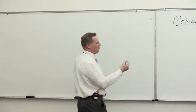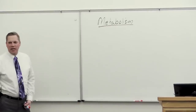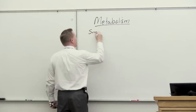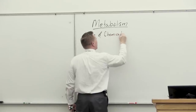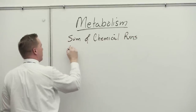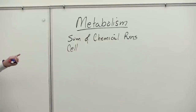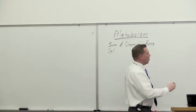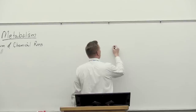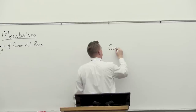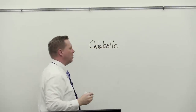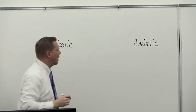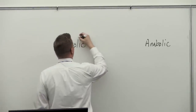Welcome, ladies and gentlemen. Today we're going to be talking about metabolism. In our Bio 180 class, this is the beginning of module four. Metabolism can be defined as the sum of all the chemical reactions in the body, or more specifically in the cell. We're going to divide it into two categories: catabolic reactions, or catabolism, and anabolic reactions, or anabolism. These are on opposite sides and kind of opposite of each other.